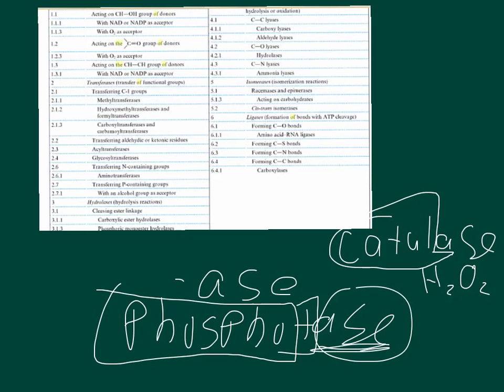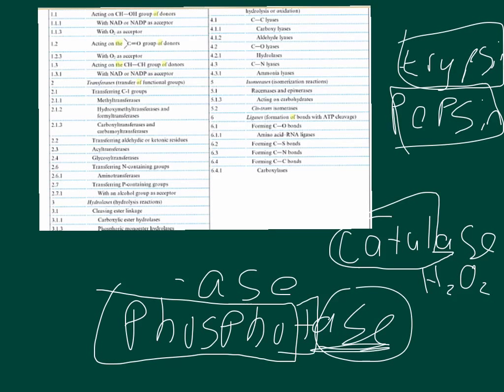So there were some common names that didn't fit. And then there were some other things that didn't have the A-S-E ending at all. Enzymes like trypsin and pepsin, enzymes in your stomach. And so they didn't have any type of A-S-E ending. Naming enzymes for a long time was just a mess.